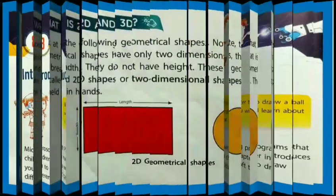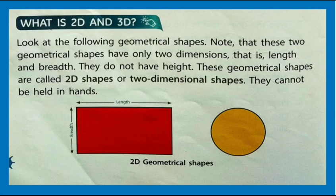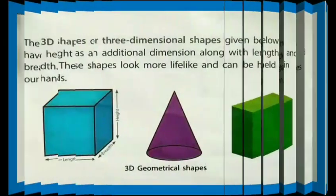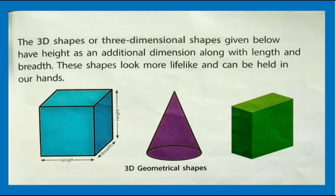What is 2D and 3D? Look at the following geometrical shapes. Note that these two geometrical shapes have only two dimensions — length and breadth. They do not have height. These are called 2D shapes or two-dimensional shapes; they cannot be held in hands. 3D shapes, or three-dimensional shapes, have height as an additional dimension along with length and breadth. These shapes look more lifelike and can be held in our hands.